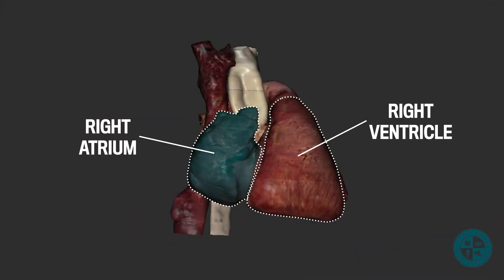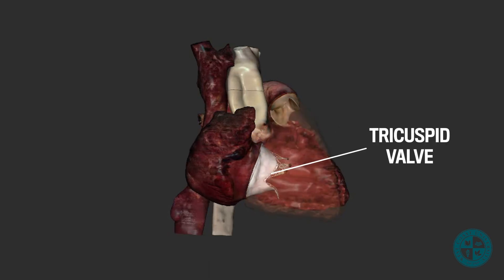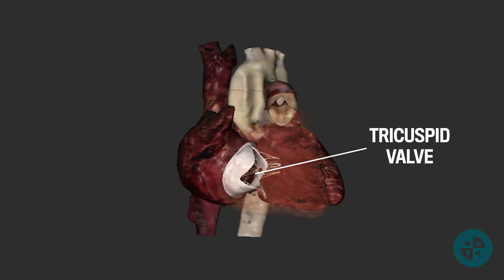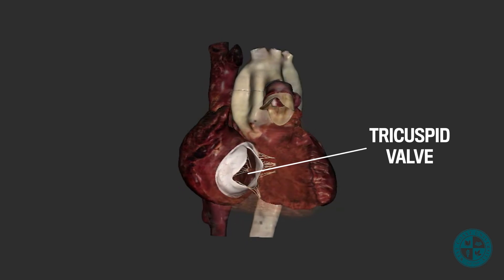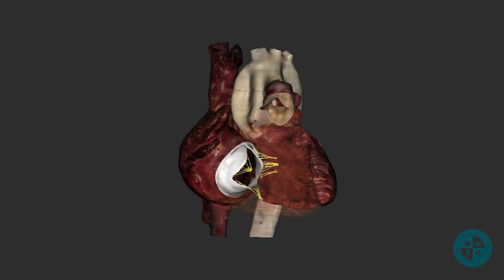As the oxygen-poor blood travels from the right atrium to the right ventricle, it must pass through a valve. This valve is one of the two atrioventricular valves called the tricuspid valve. You will notice that this valve has three cusps, which explains the origin of its name. Attaching to each of the cusps are strong connective tissue fibers that look like little strings.